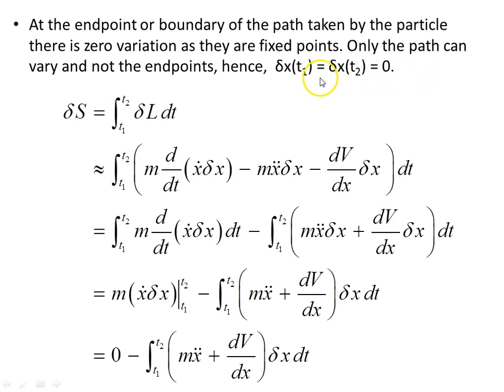Now, at the endpoint, as we saw in the earlier diagram, the endpoints are fixed, so there's no variation in the endpoints, so the δx(t₁) equals δx(t₂) is zero. The endpoints are fixed, they don't vary.